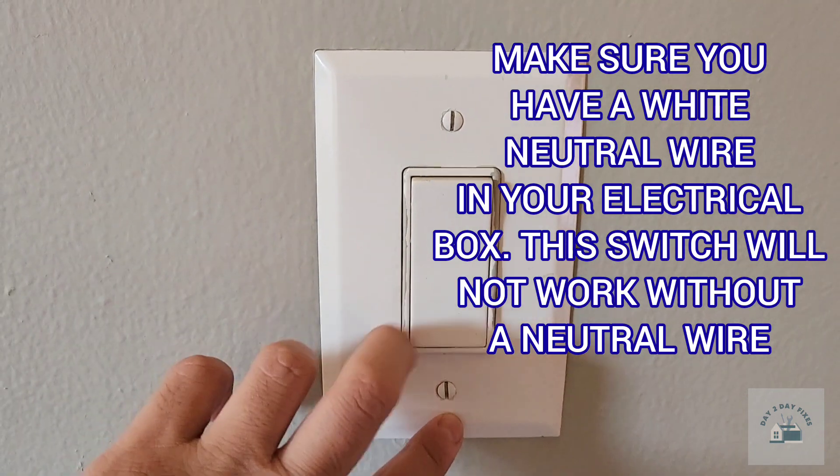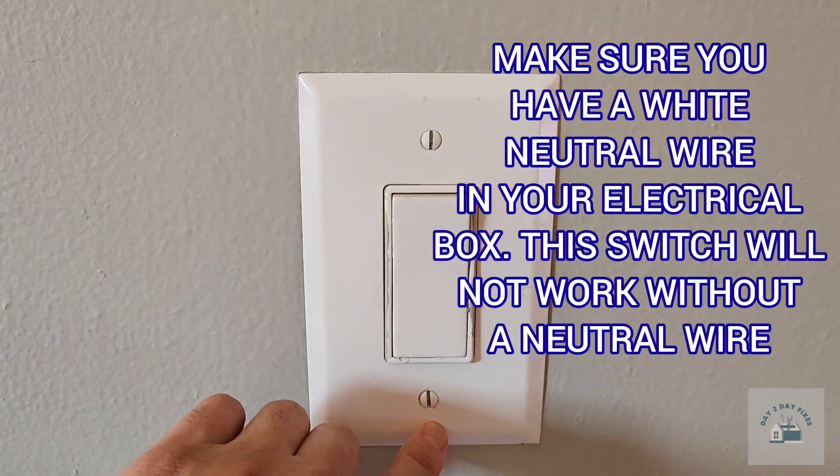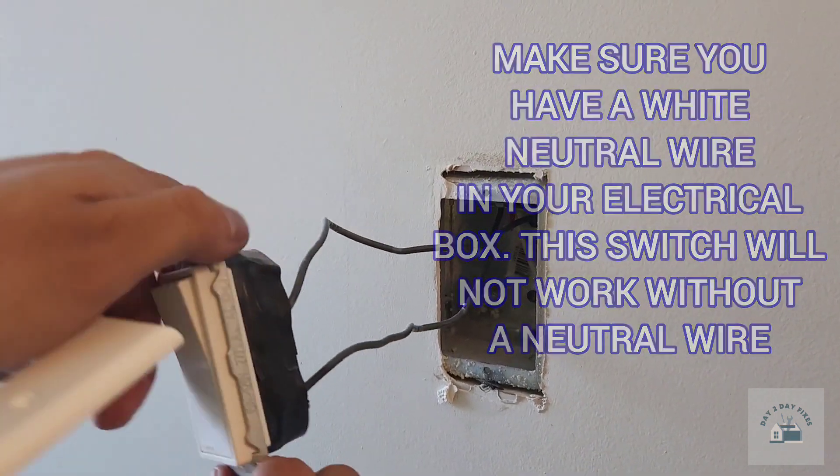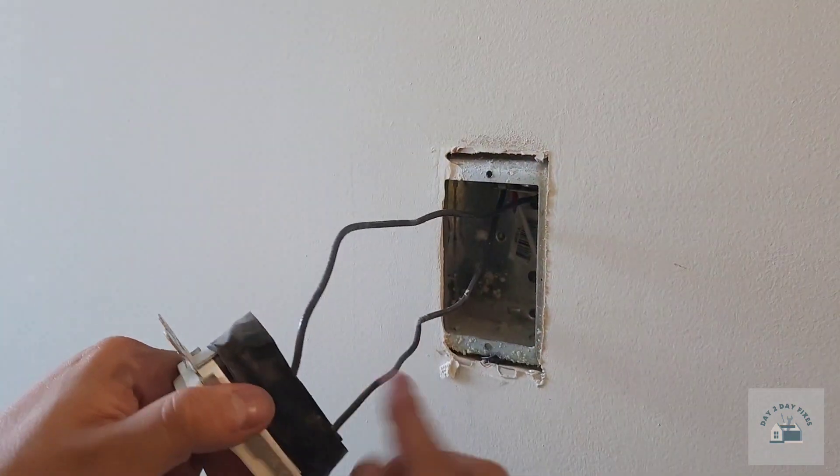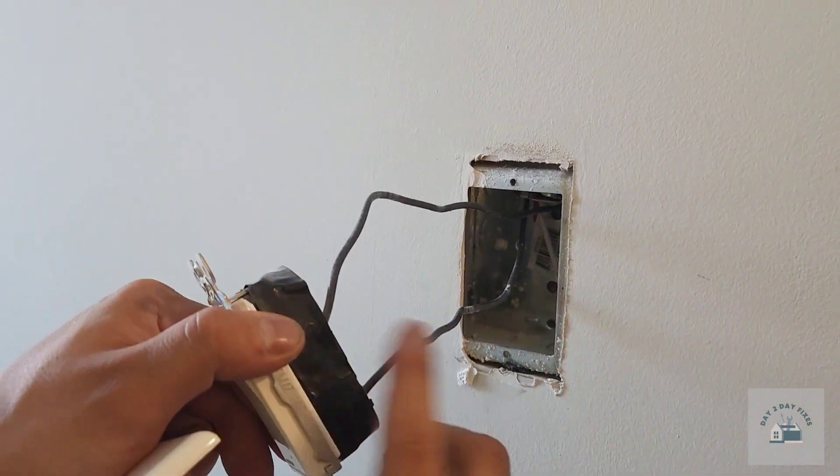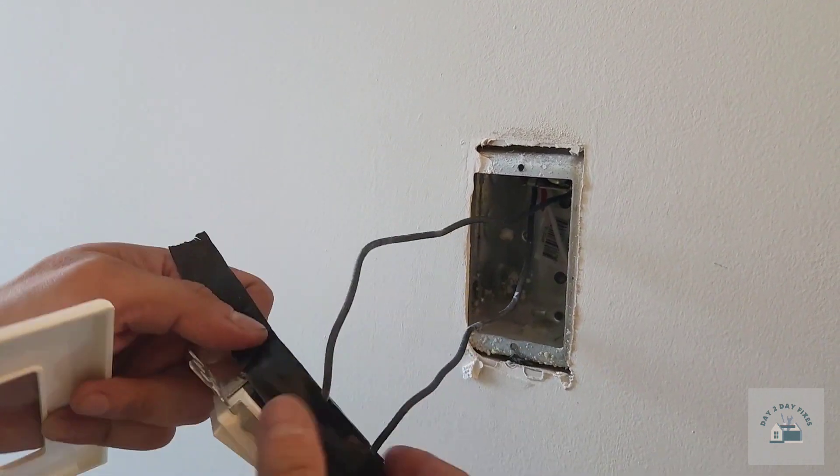Now we're going to take out the two screws on the faceplate and we're also going to take out the two screws here, which I have already done. One wire is the line, hot, or feed.